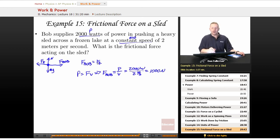And since the force of Bob equals the frictional force, we could then say that the frictional force is also equal to 1,000 newtons. It's just in the opposite direction.